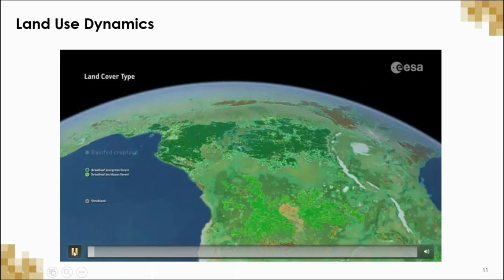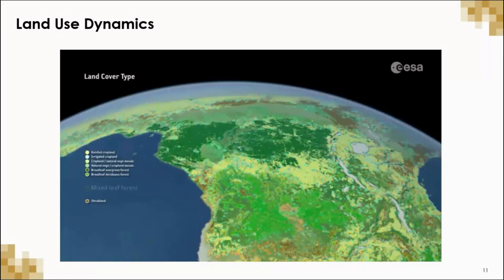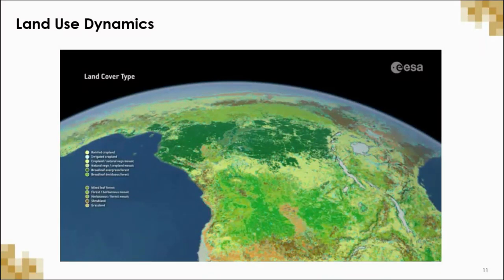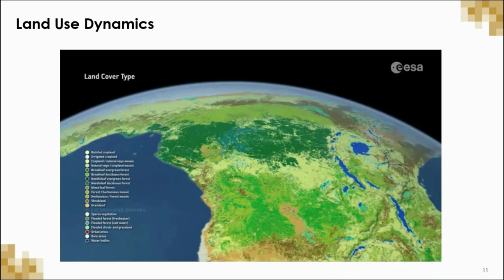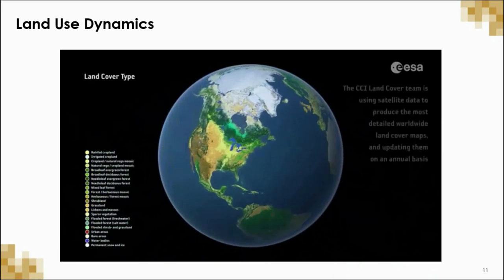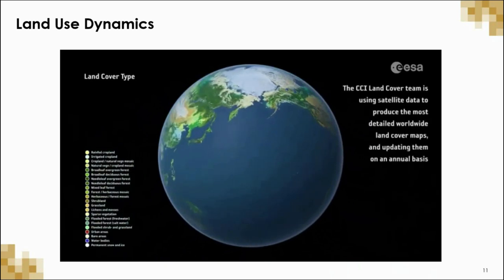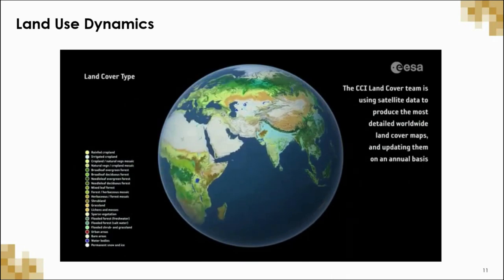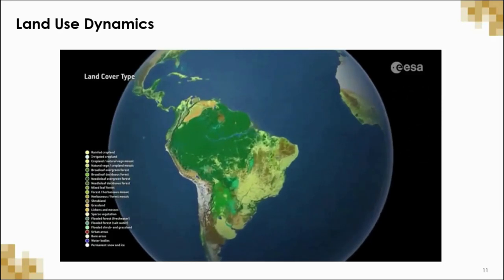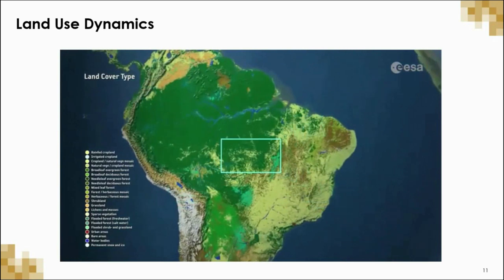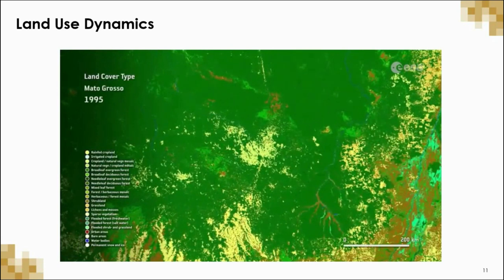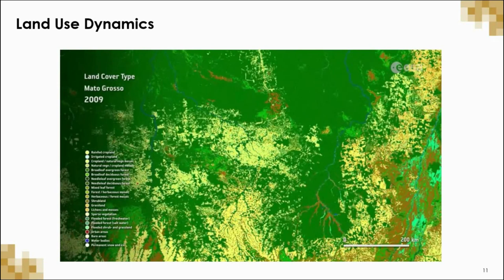This next example shows the use of space-based observations to monitor changes in land use dynamics over time through the mapping of land cover types. The European Space Agency's Climate Change Initiative, or CCI, is producing annual maps of land cover type at a spatial resolution of 300 meters. Now we're zooming in on Mato Grosso, Brazil, resulting in forest loss over a 20-year period between 1995 and 2015.